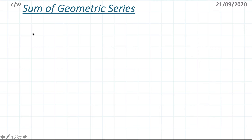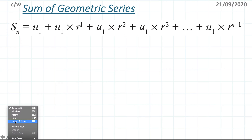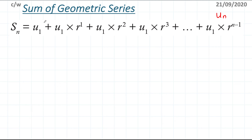First I'll lay out the terms of a geometric sequence: the first term is u1, the second term is u1 times r to the power of 1, the third term is u1 times r squared, and so on. The last term, un, is u1 times r to the power of n minus 1. So u1 is the first term, u2 the second, u3 the third, and I'm adding all of these together.